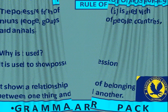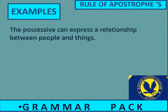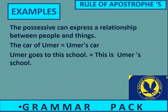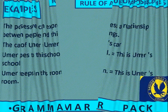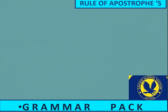Let's consider some examples. The possessive can express a relationship between people and things. The car of Umar would be Umar's car. Umar goes to this school — this is Umar's school. Umar sleeps in this room — this is Umar's room. Toh aap ne dekha, hum ne apostrophe s wale jumlou mein tabdeel kar diya.